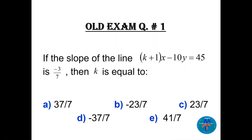This is a multiple choice MCQ. If the slope of the line (k+1)x minus 10y equals 45 is minus 3 over 7, find k.